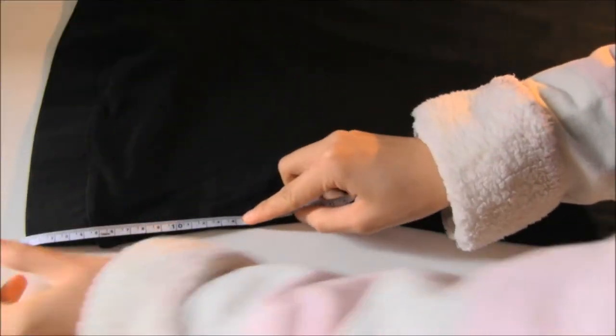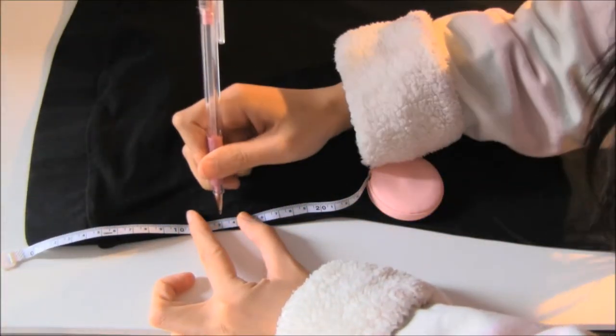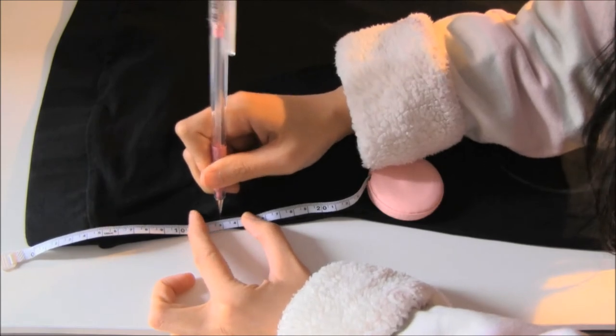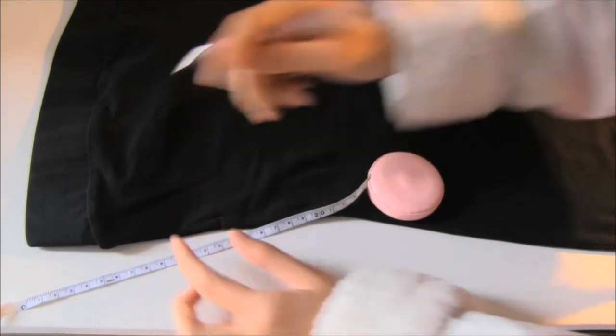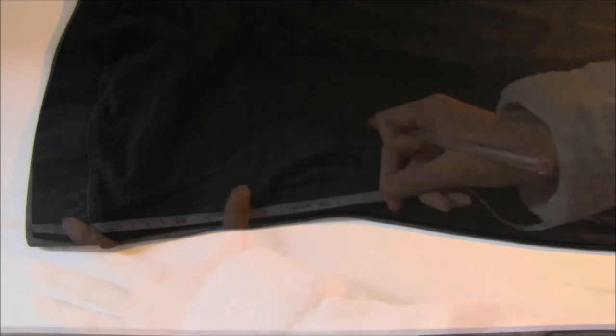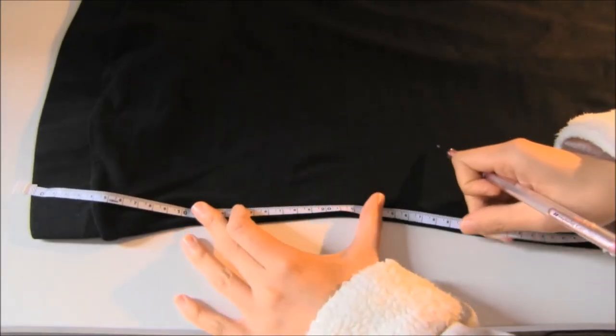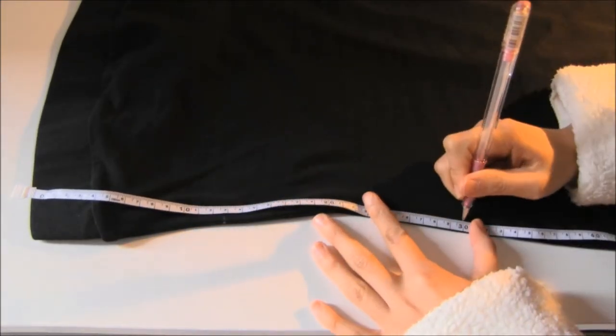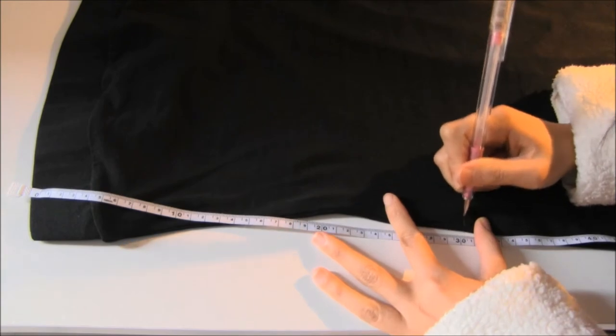Then measure under the bust line and make a mark. This would be the top of the cutout. Make sure you leave enough material at the top so that the bra is covered. Then measure just above the hip and make another mark. This would be the end of the cutout.